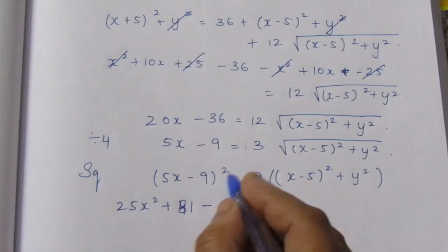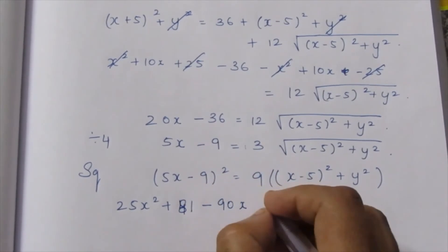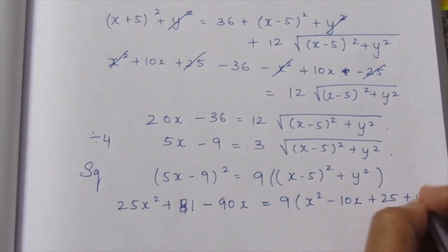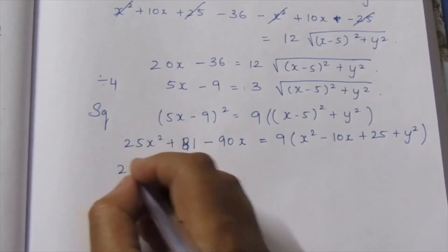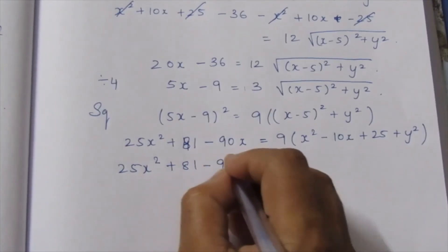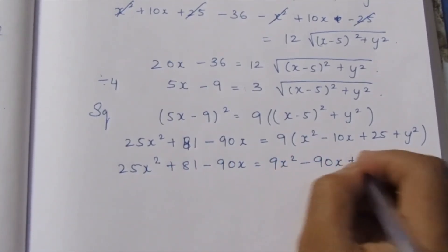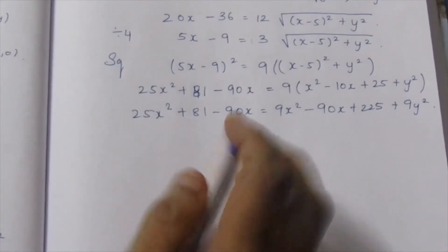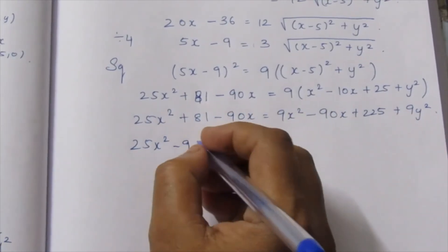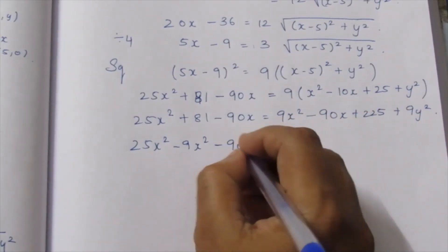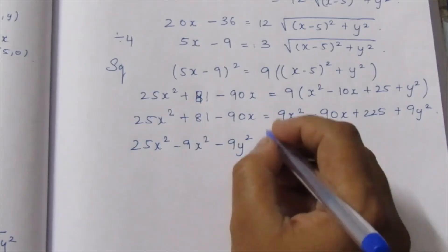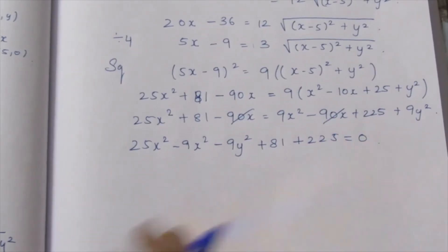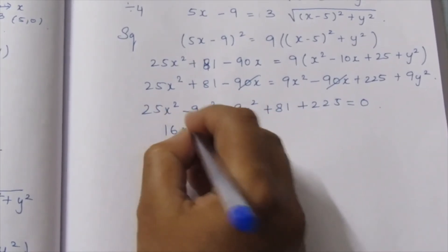Expanding using (a - b)² formula: 25x² minus 90x plus 81 equals 9x² minus 90x plus 225 plus 9y². Collecting like terms: 25x² minus 9x², the 90x terms cancel, and 81 minus 225. So 16x² minus 9y² minus 144 equals 0.